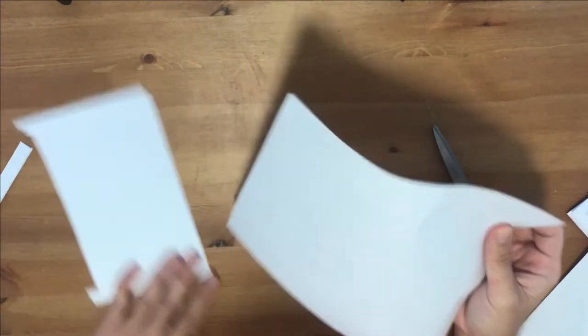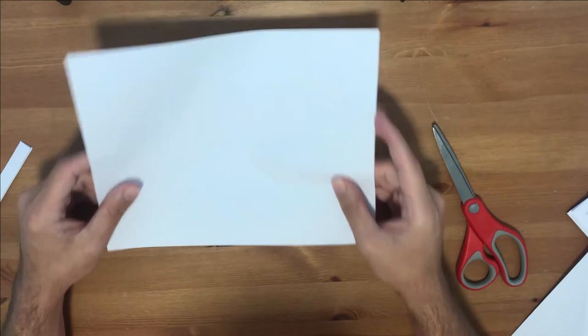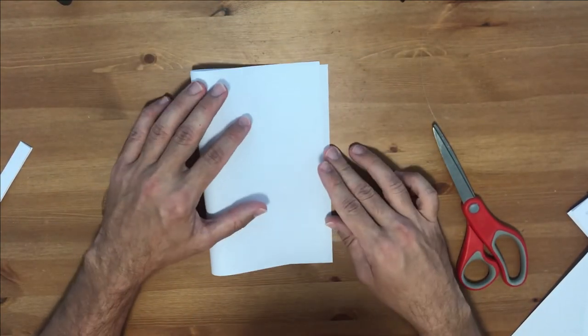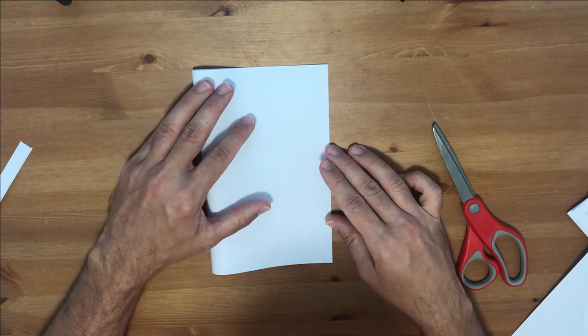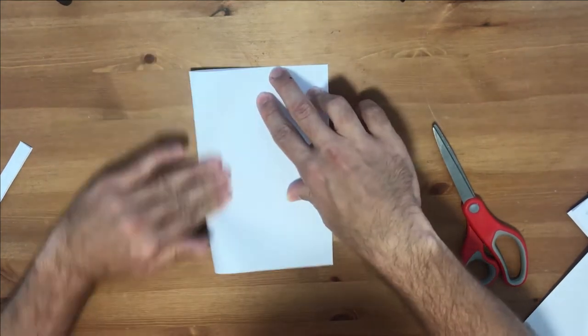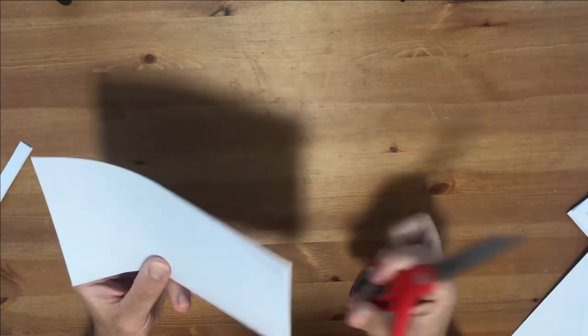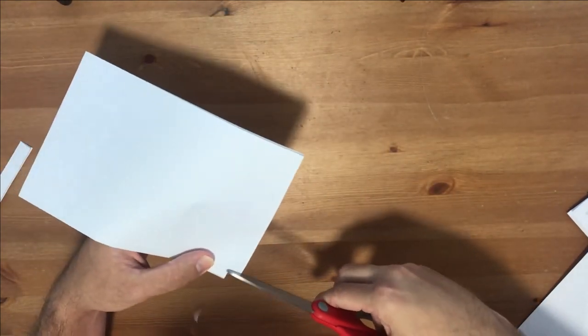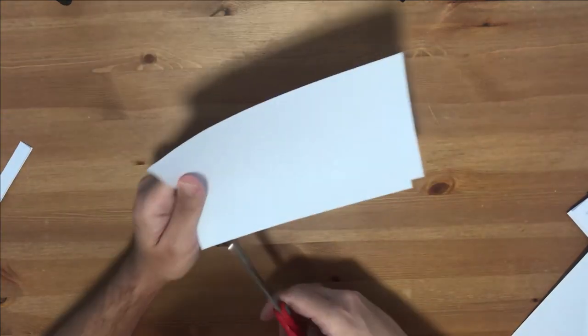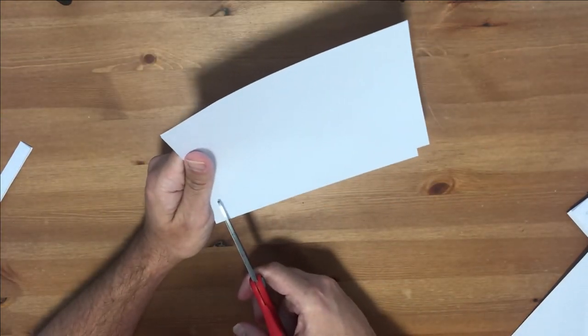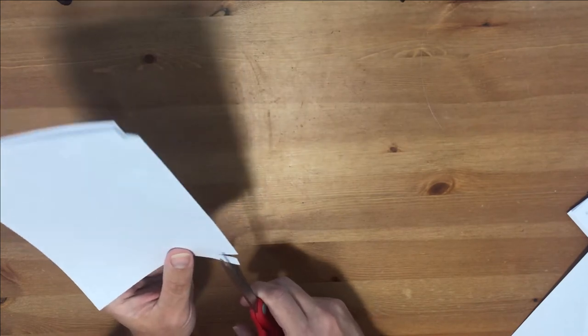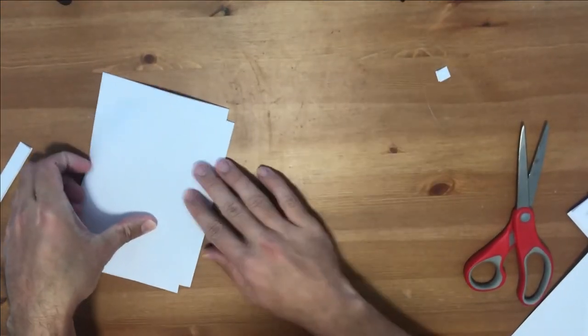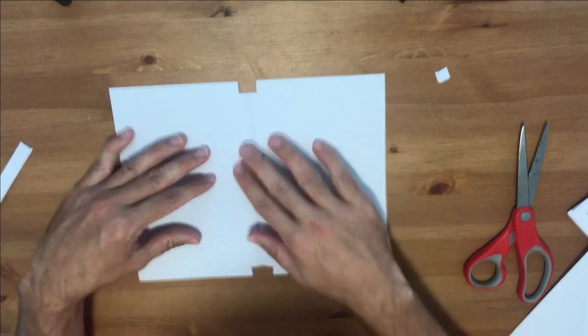Now for your other pages, we're going to put that aside for a second. For your other pages, you have to sort of cut the opposite. So we're going to fold this in half. Cut that out like that. So now you should have a sheet like that.